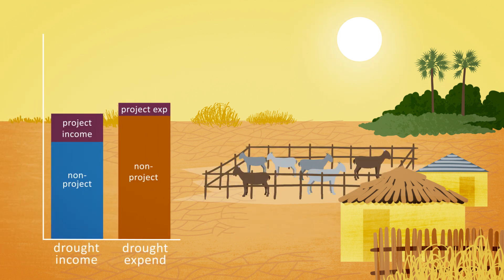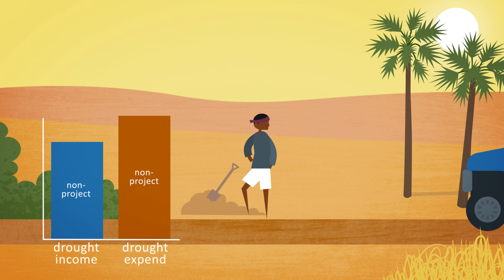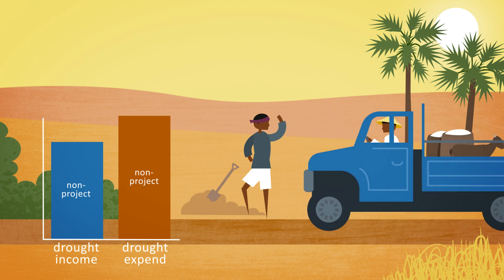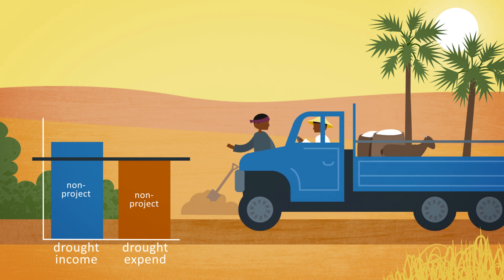The goat trading project doesn't help with the rice losses, but it does mean that households can sustainably sell more goats. The income from this eliminates the deficit with some cash to spare. The staple food project doesn't help on the income side, but reduces the effects of the food price rises on expenditure, and thereby also eliminates the deficit.